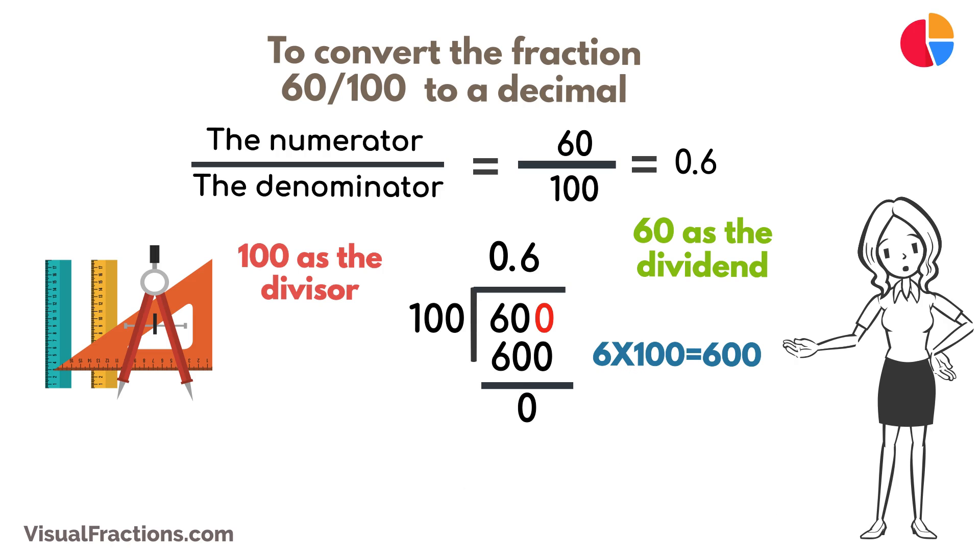So there we have it. The fraction 60/100 converted to a decimal is 0.6. This conversion process demonstrates a straightforward method to understand and represent fractions in decimal form.